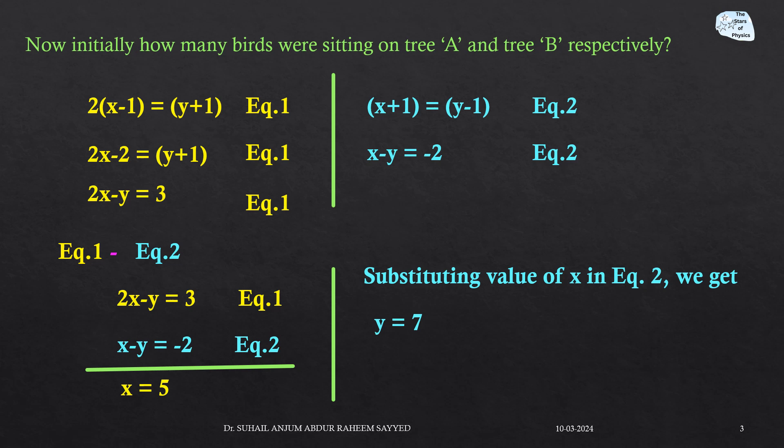Now we subtract equation 2 from equation 1. Writing equation 1 as 2x minus y equals 3 and equation 2 as x minus y equals minus 2, and subtracting: the y terms cancel, and 2x minus x gives x equals 3 minus (minus 2), which equals 5. Therefore x equals 5.